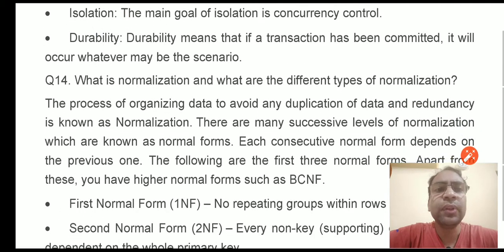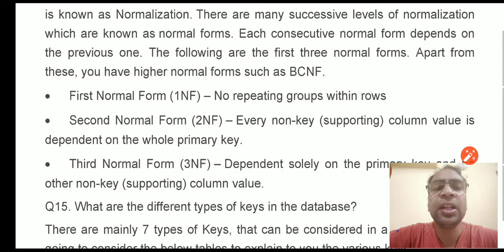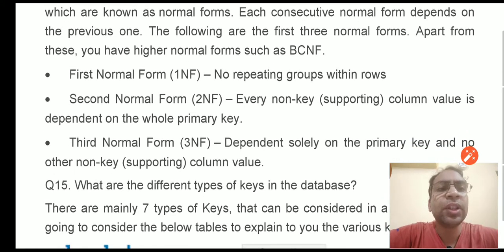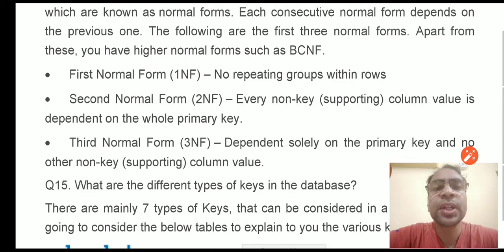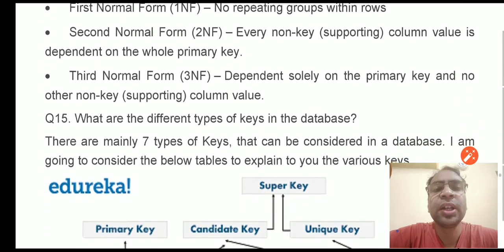Next, what do we mean by normalization and what are the different types? The process of organizing data to avoid any duplication and redundancy is known as normalization. There are many types of normalizations starting from 1NF, 2NF, 3NF, 4NF, BCNF, and more. In 1NF, there are no multi-valued cells in the table. In 2NF and 3NF, we do not support certain types of dependency.